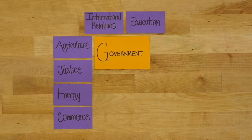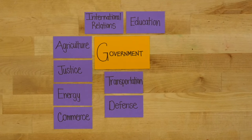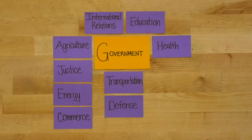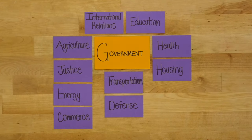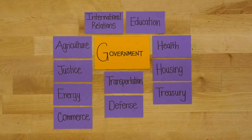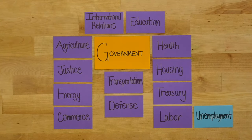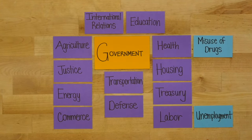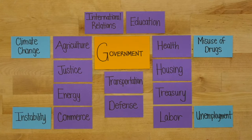Outside of the government itself, so many other groups influence society. This includes corporations, the media, nonprofits, clinics, lobbying groups, and the people themselves. These groups have a lot of influence, but instead of representing a particular country, state, or physical area, they often go beyond borders and represent a set of values or an ideology.